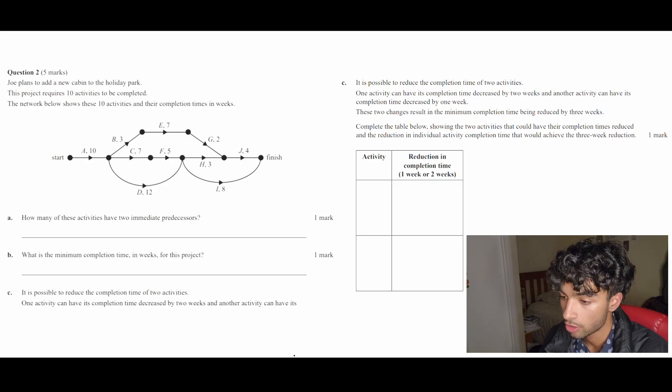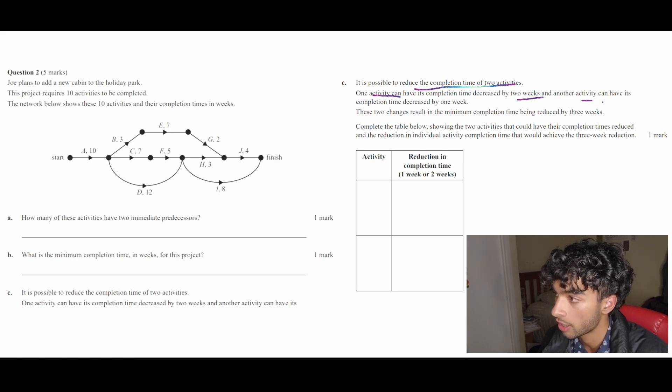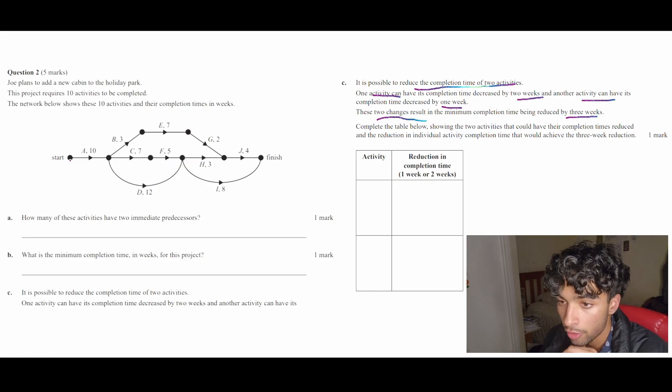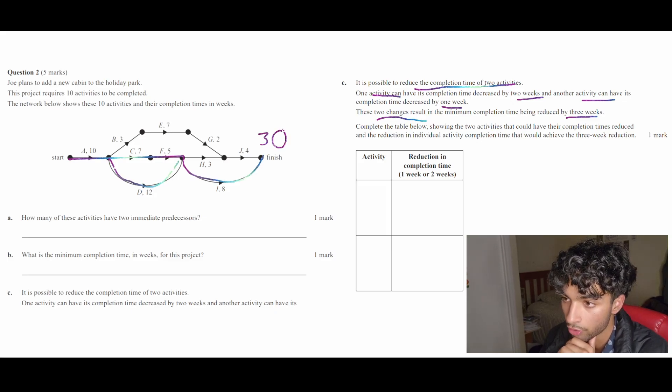Now we have part C of the question, which is probably the hardest part because it's involving crashing, which is a bit hard to look at. Well, it's still fine. So we can reduce the completion time of two activities. One can be reduced by two weeks and the other can be reduced by one week. These two changes result in the overall project being reduced by three weeks. So if we remember what our critical path was, which is the longest path, it goes here and then here and then here. And it also goes around here and that gives us a total of 30 weeks.